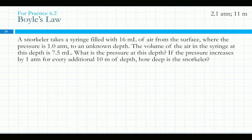We can also use this to determine depths. If we've got a snorkeler who has a syringe filled with 16 milliliters of air from the surface where the pressure is one atmosphere, takes that syringe down to an unknown depth, and looks at the volume when he gets down there — it's down to 7.5 milliliters. So what's the pressure at that depth? And if pressure increases by one atmosphere for every additional 10 meters of depth, how deep is the snorkeler? This is where we use Boyle's Law: P1V1 equals P2V2. We know the initial pressure is one atmosphere.